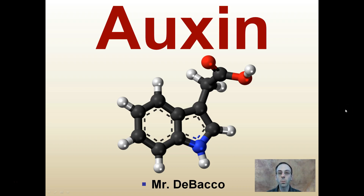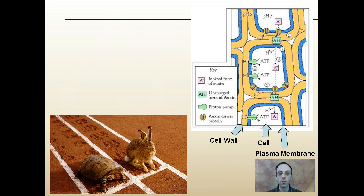Here we're going to learn about the plant hormone called auxin. This is what it looks like as a chemical structure — the ball and stick model — and we're going to learn about how it influences and impacts plants.